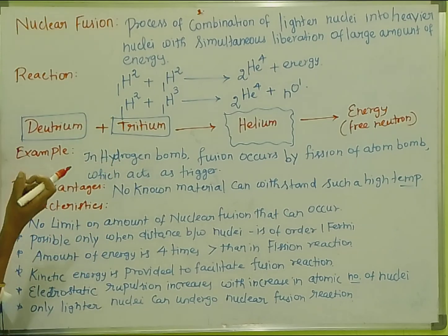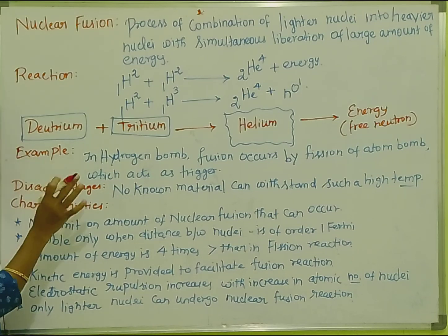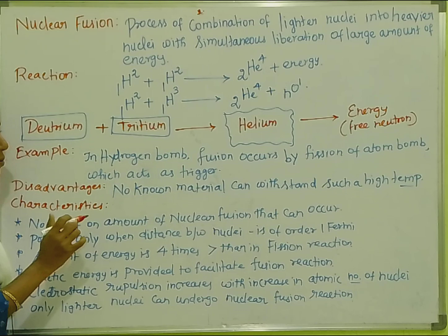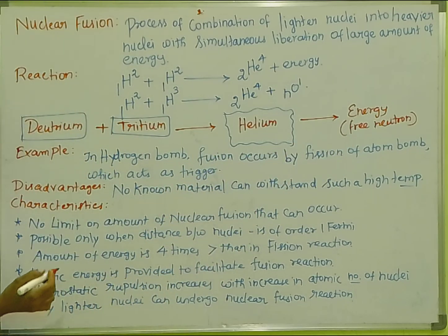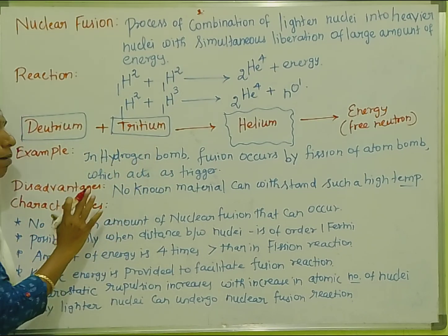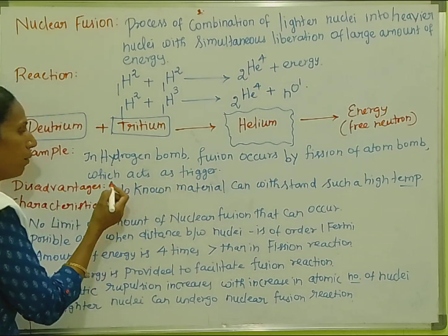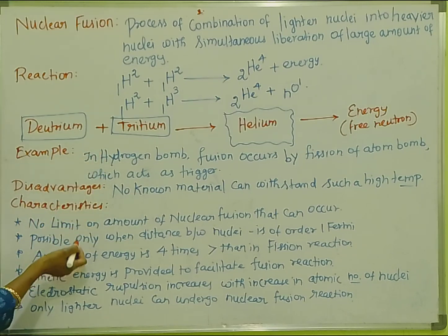Moving on, we can relate this to nuclear fission. For example, nuclear fusion is used in the hydrogen bomb. Fusion occurs by fission of an atom bomb. The atom bomb acts as a trigger initiating the fusion reaction in the hydrogen bomb.